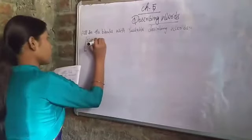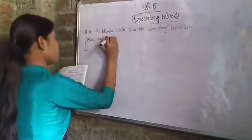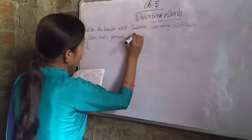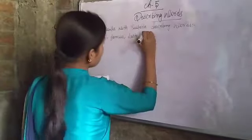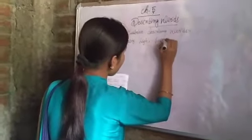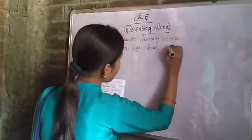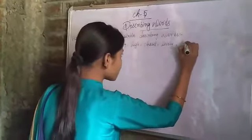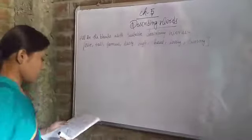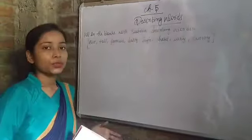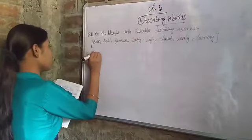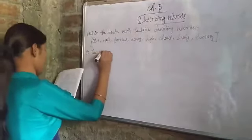The options are: blue, tall, famous, tasty, high, short, lovely, sunny. We have to use these options to fill the blanks. Number one: this is a blank umbrella.